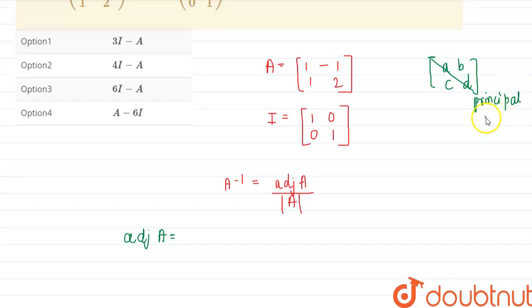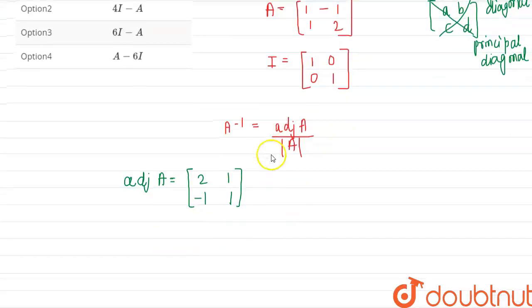diagonal and this be called as the left diagonal. So what we actually do is on the principal diagonal we change their positions, so that becomes (d, a). And on the left diagonal, that is on the b and c, we change the signs. So this will become -b and this will become -c. So this will be the adjoint of A.